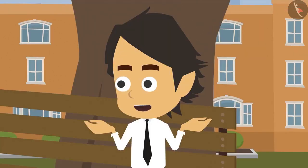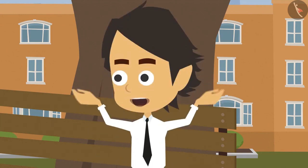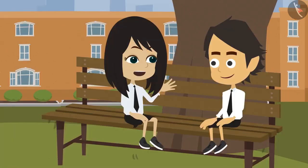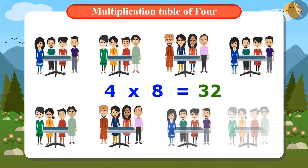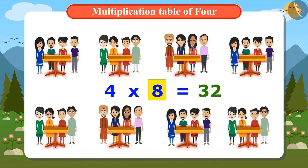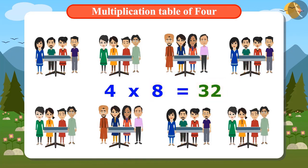But my problem hasn't been resolved. How many tables are needed for 32 guests? Hey, we already know it. Look, 32 comes in the multiplication table of 4 when we multiply 4 by 8. That means you need 8 tables. Oh yes, from this multiplication table, we can say that 8 tables can be used by 32 guests.